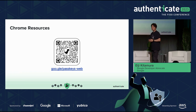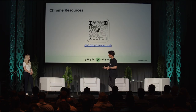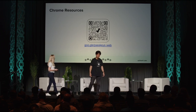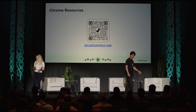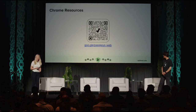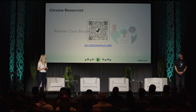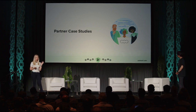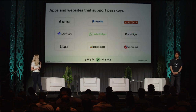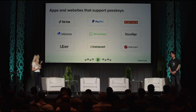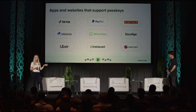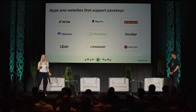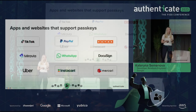Now let me hand it back to Kate to talk about case studies. Today, many websites and applications have already started adopting PassKeys. We're featuring a few of them today, but there are many more — TikTok, PayPal, Kayak, Miravio, WhatsApp, DocuSign, Uber, Instacart, Mercury, Yahoo Japan, and many others have already started adopting PassKeys on their apps and websites. Some are doing A/B testing right now, while others like Kayak and Miravio have fully rolled out to production.